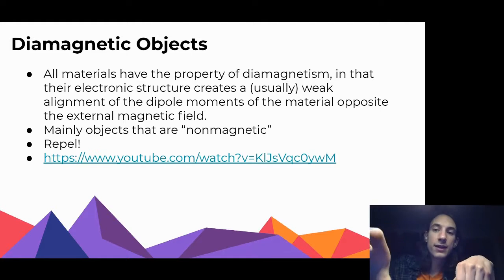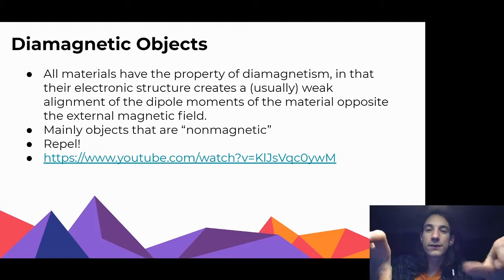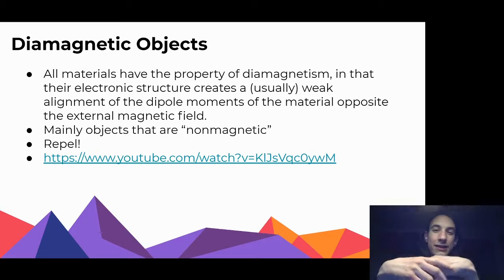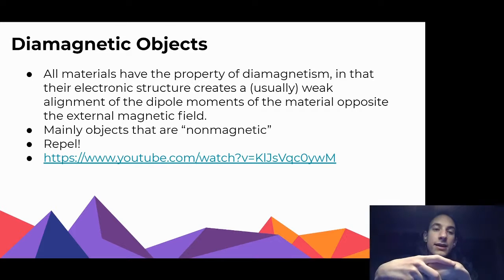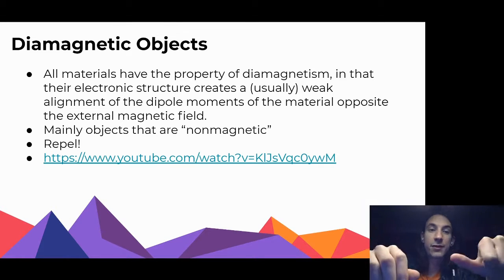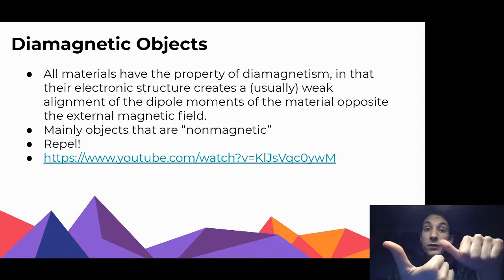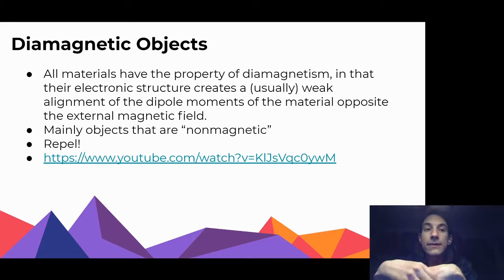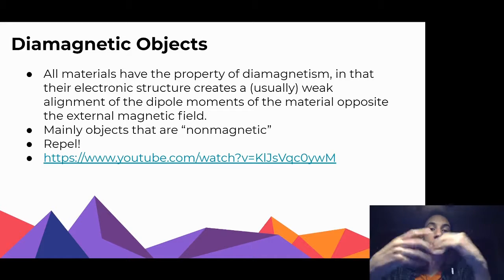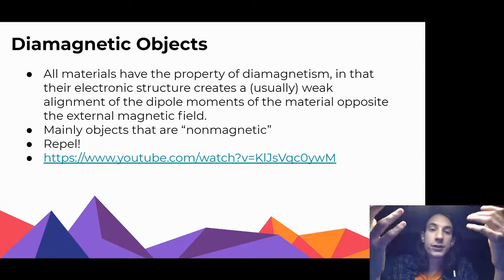With diamagnetic materials, you bring a magnet in, and instead of the south pointing towards it, it'll actually turn the other way and oppose it. These are usually going to be pretty weak, and it's going to be in objects that are non-magnetic, and it's going to cause our objects to repel. So unlike paramagnetism and ferromagnetism where things line up like a compass would, this diamagnetic object is doing the opposite - it's going to repel.